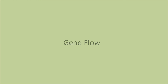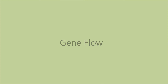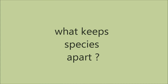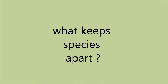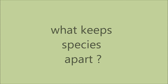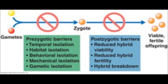Now, according to this definition, you will expect gene flow, or not gene flow, between species. This means mating within species, or not mating between species. Now let's talk about what keeps species apart. Reproductive isolation is the barrier that keeps species apart.